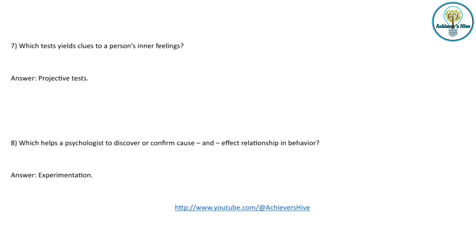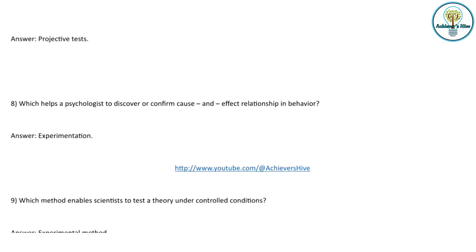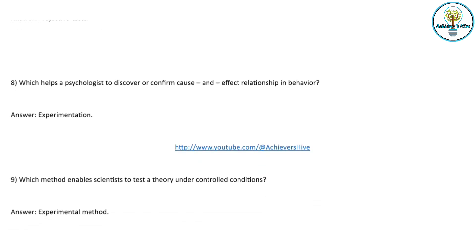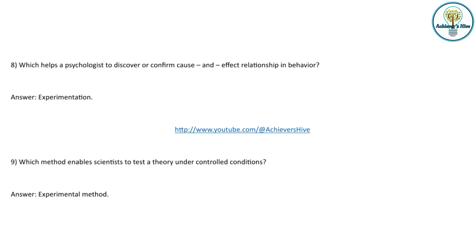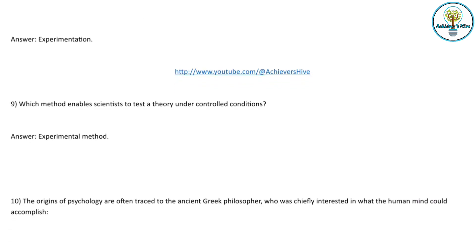Which method helps a psychologist discover confirmed cause-and-effect relationships in behavior? These are called experimentation. A cause-and-effect relationship is always established in an experiment. Which method enables scientists to test a theory under controlled conditions? That is again the experimental method.